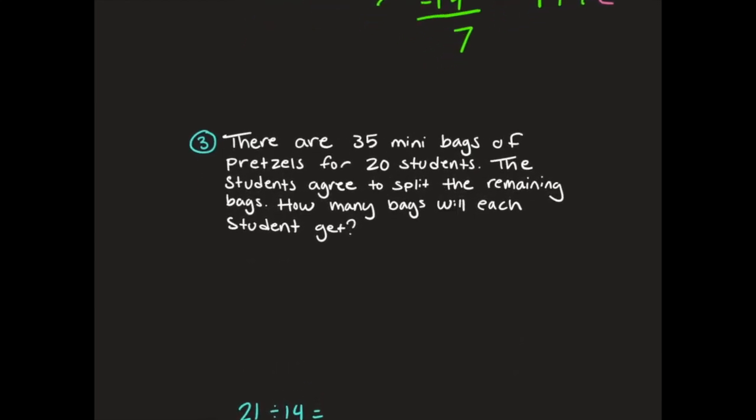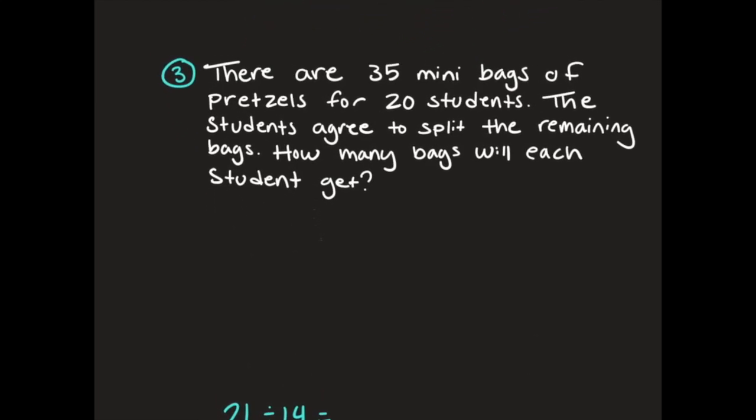Now going on to problem number 3. There are 35 mini bags of pretzels for 20 students. The students agree to split the remaining bags. How many bags will each student get? I'm writing down my problem and thinking, how many of an object do I have? I have 35 bags of food. What am I dividing it by? 20 students. So here's my math problem: 35 divided by 20.